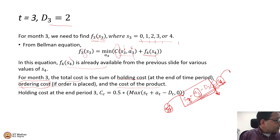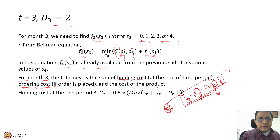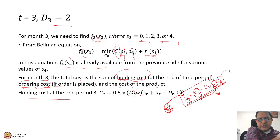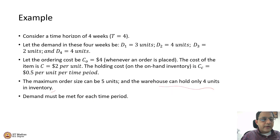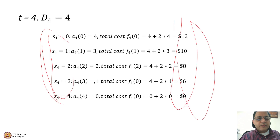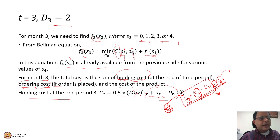So what is the total cost? The cost component of being in S3 and taking action A3 is: the ordering cost due to A3, the product cost due to A3, and the holding cost of (S3 + A3 − D3). The holding cost is 0.5 dollars per unit per time period, so the total holding cost is 0.5 × (S3 + A3 − D3).